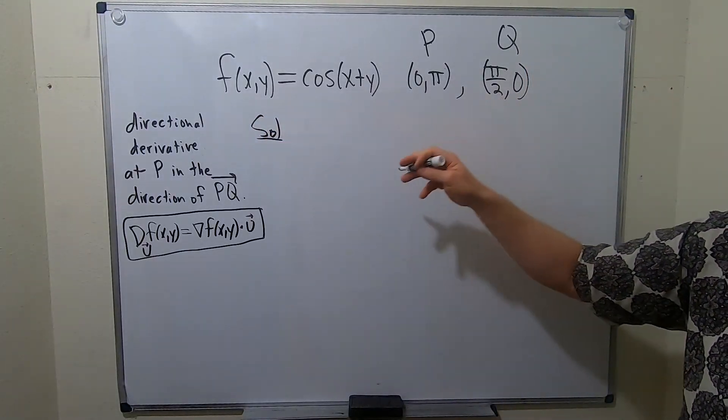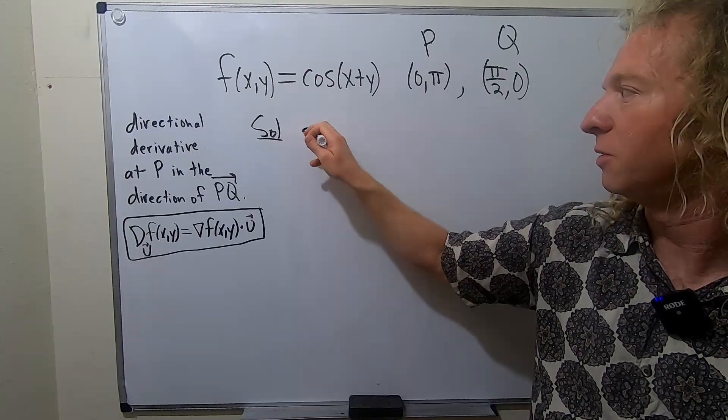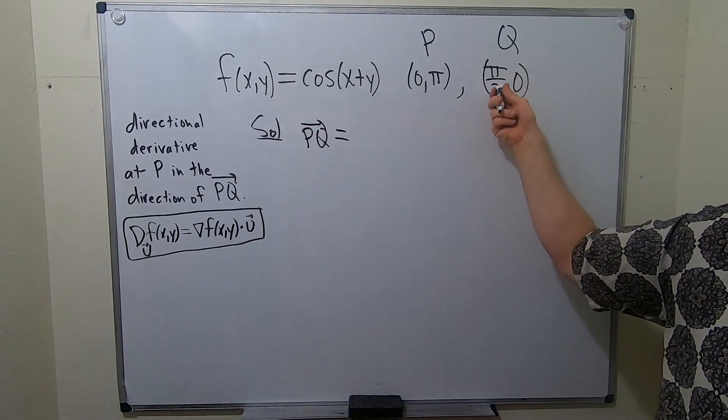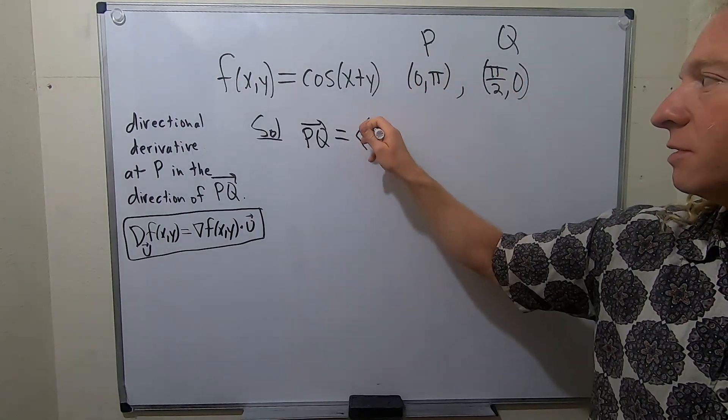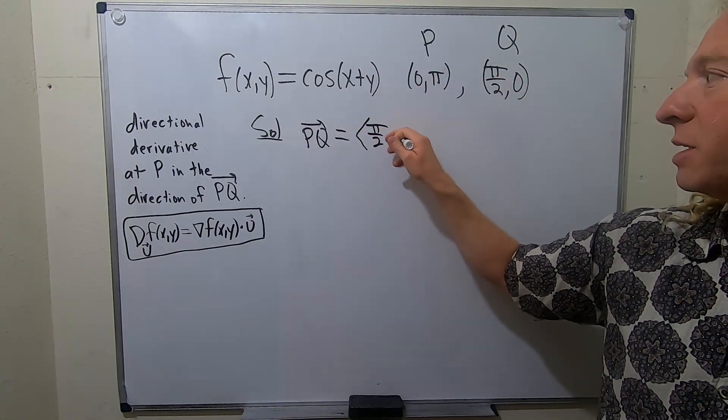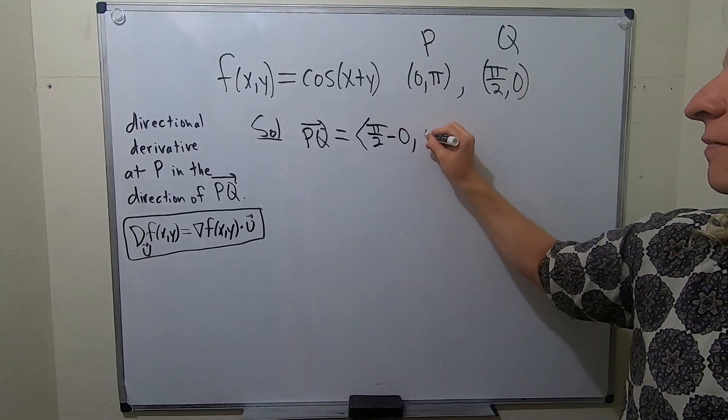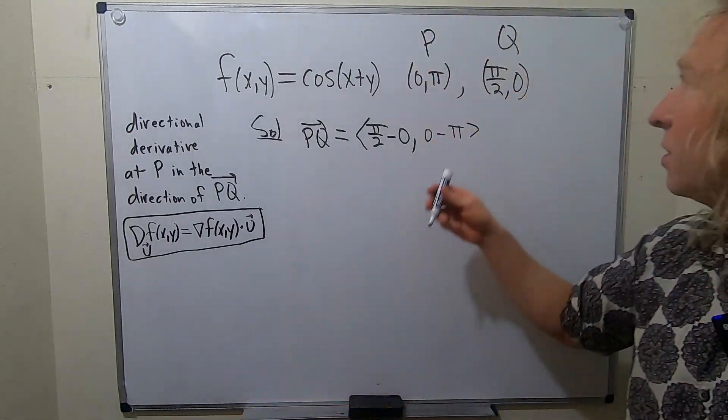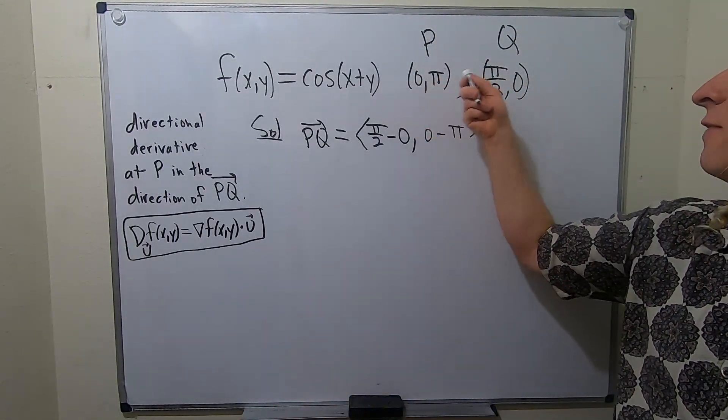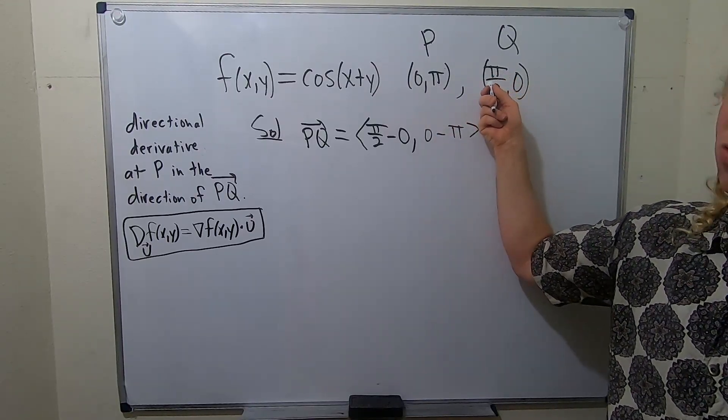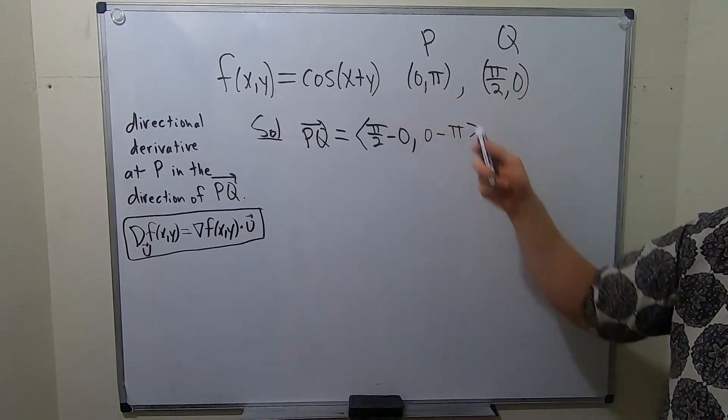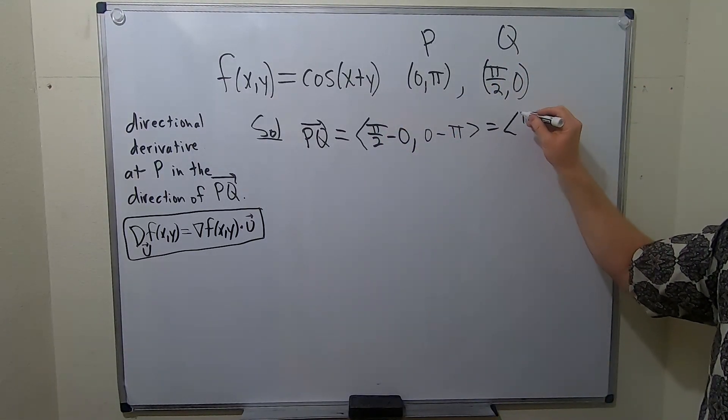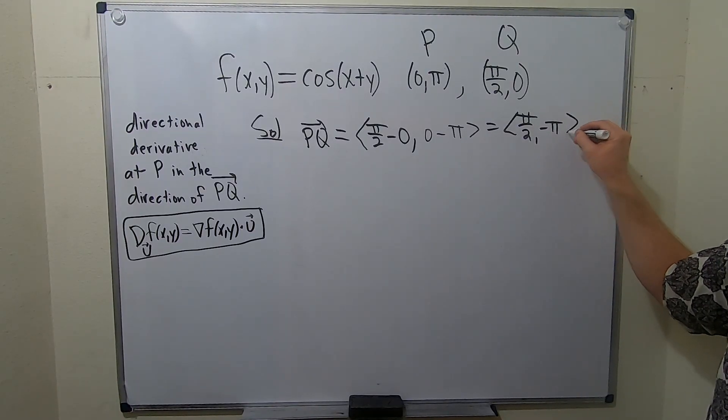Our vector is PQ. You just subtract - it's terminal minus initial. So it's this minus this, so it'd be π/2 minus 0, 0 minus π. That's going to be our PQ. It's this minus this and then this minus this. So subtract the x components, subtract the y components, and it's always terminal minus initial. This will be π/2, -π.